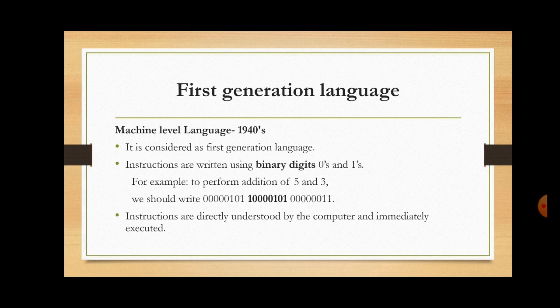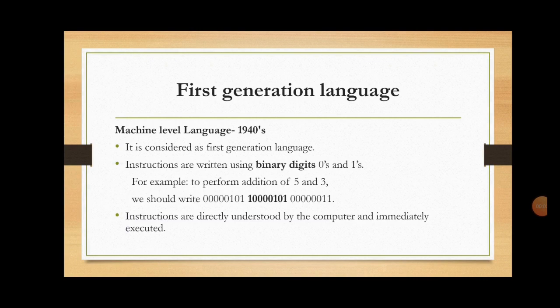In machine level language, all the program instructions are written using the binary digits zeros and ones. For example, to perform addition of 5 and 3, we write 00000101, which is the binary equivalent of 5, and 10000101, which is the binary equivalent of the addition operation, and 00000011, which is the binary equivalent of 3. Similarly, to perform subtraction, multiplication, and division, you must remember the binary equivalent of each operation.